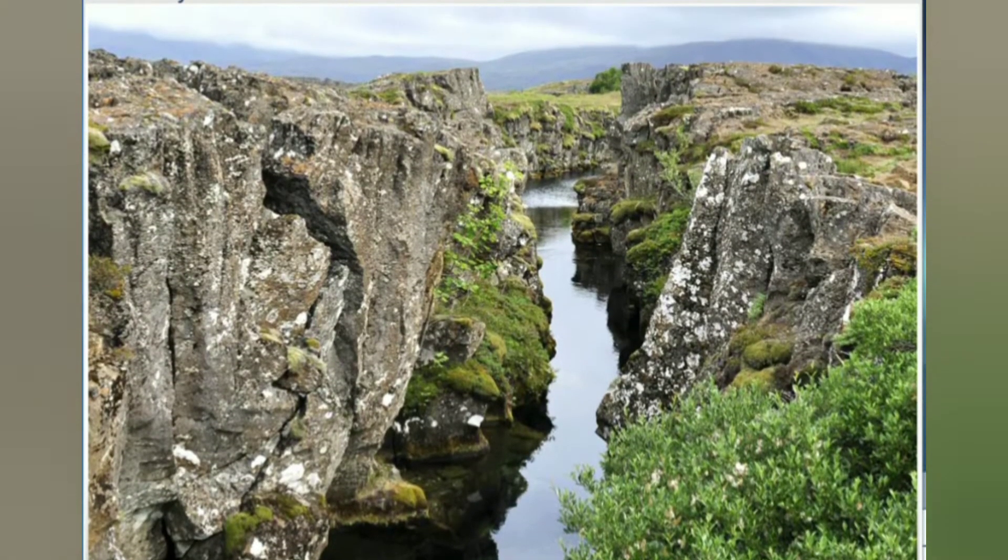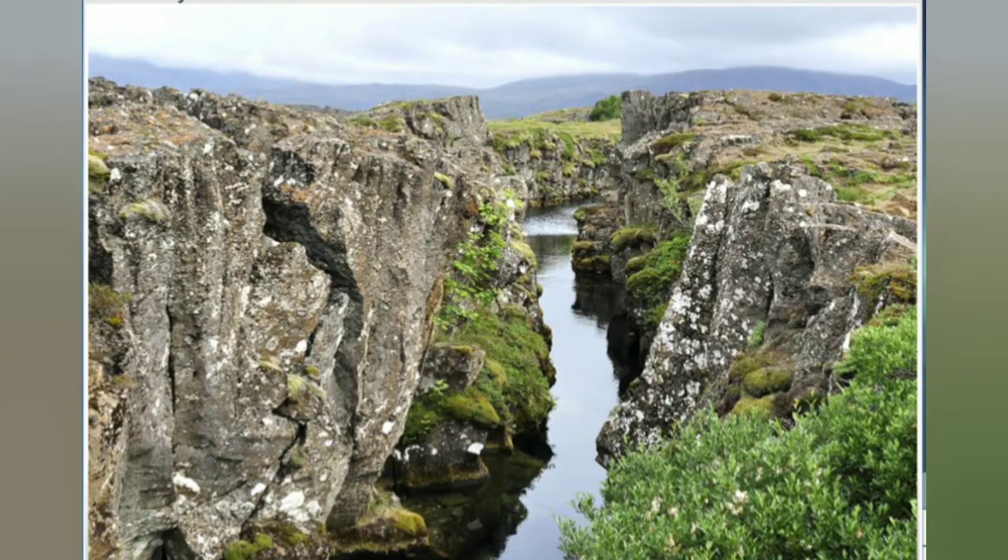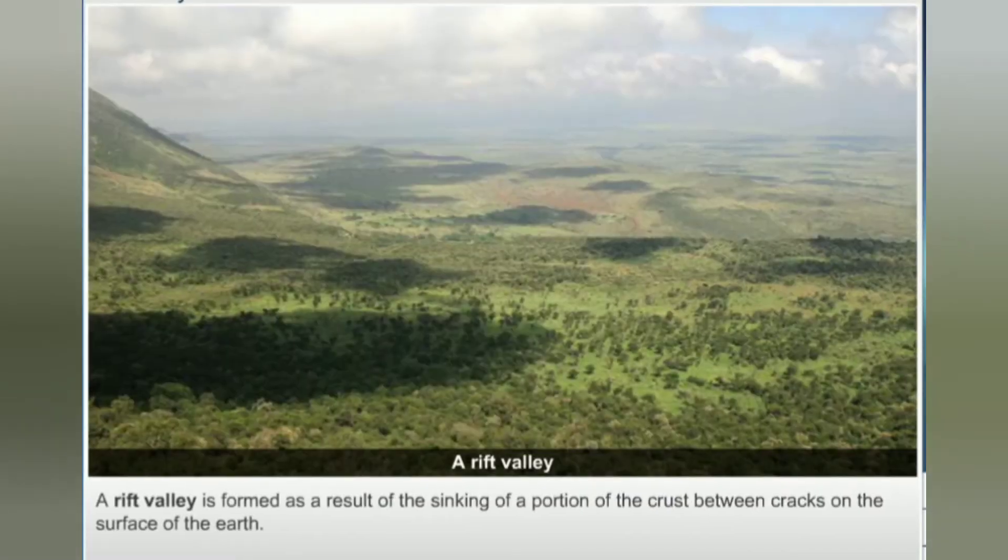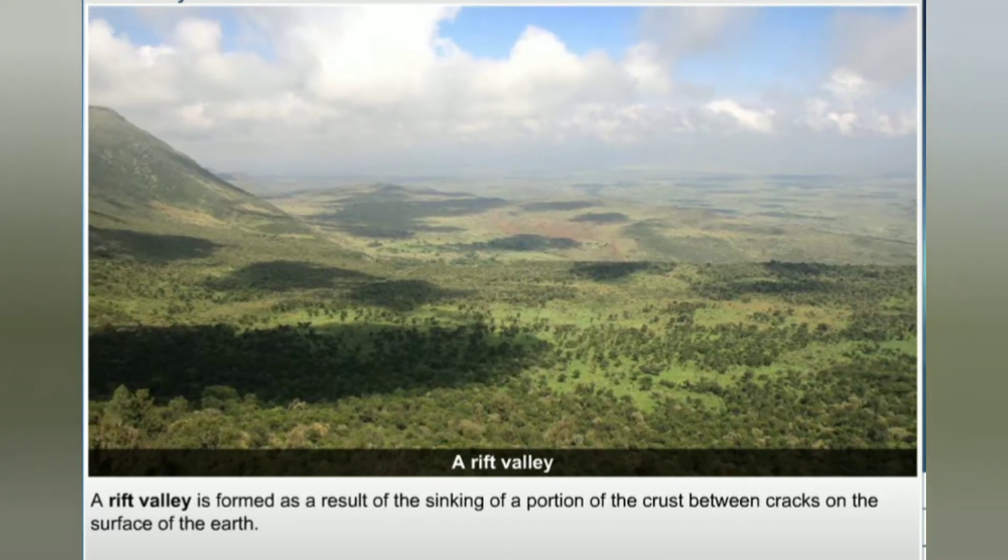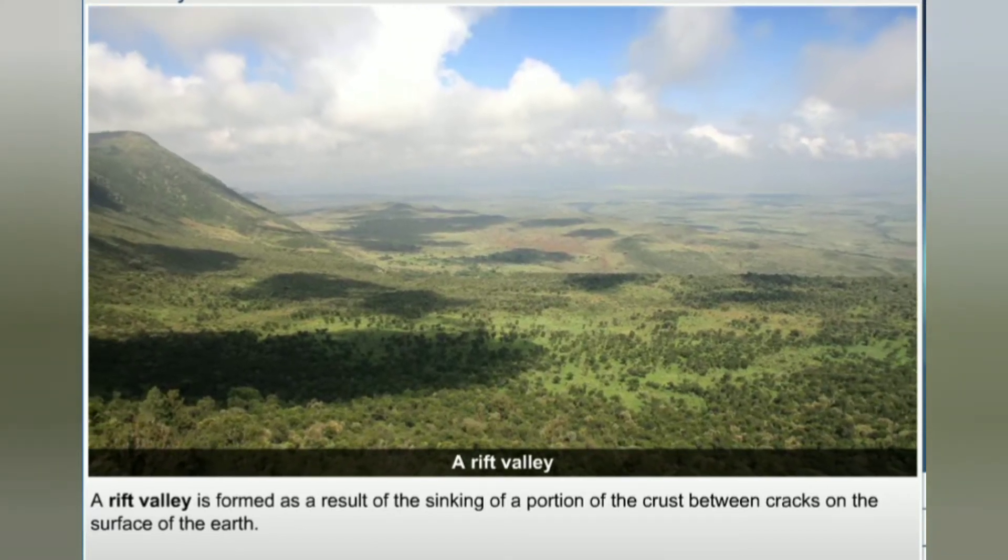Rift Valley Formation. A rift valley is formed as a result of the sinking of a portion of the crust between cracks on the surface of the earth.